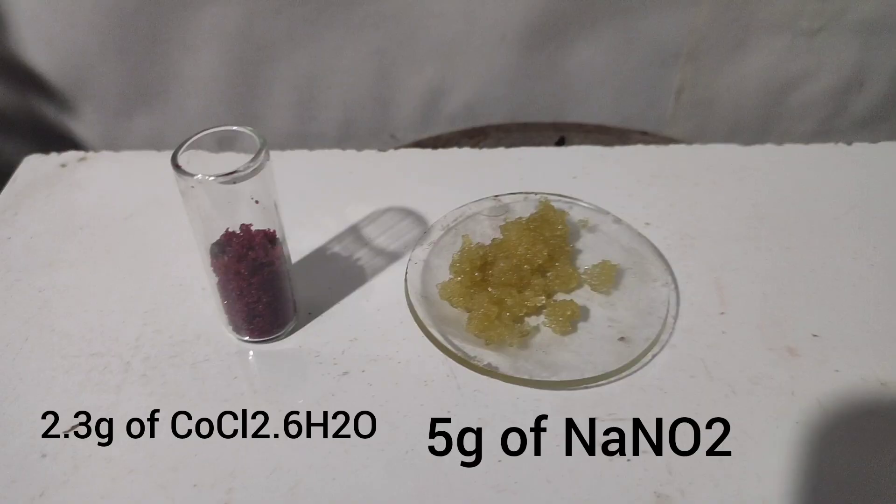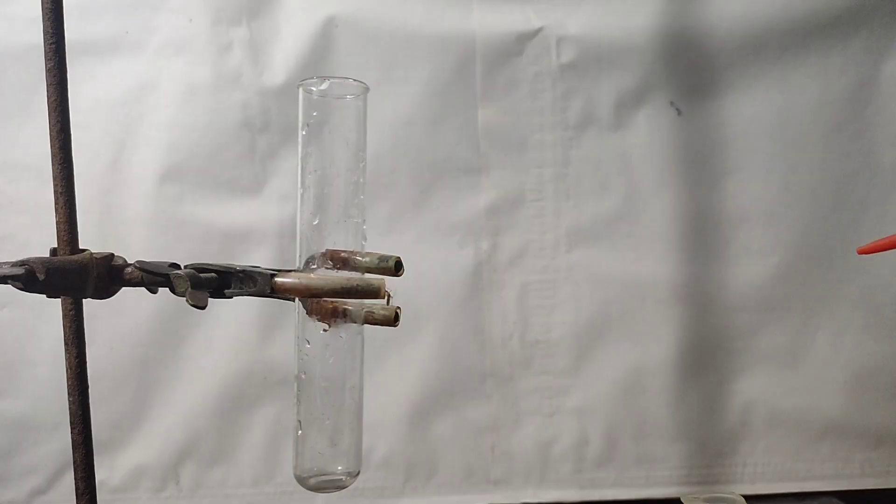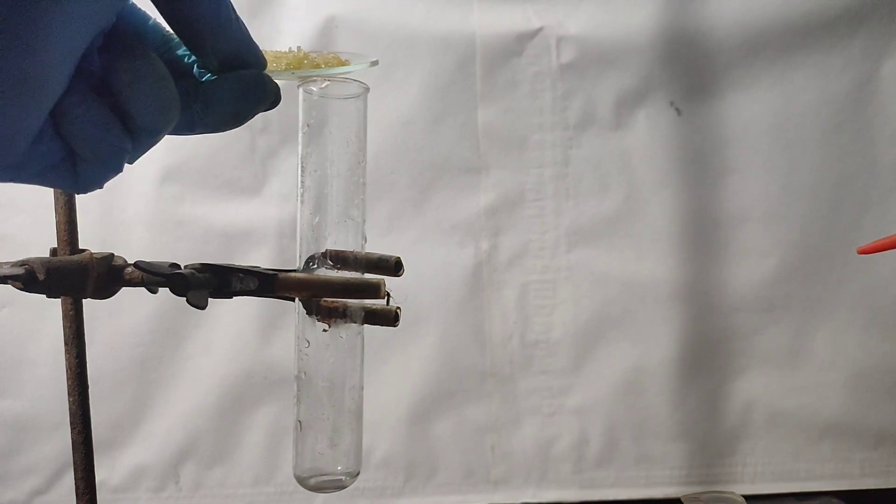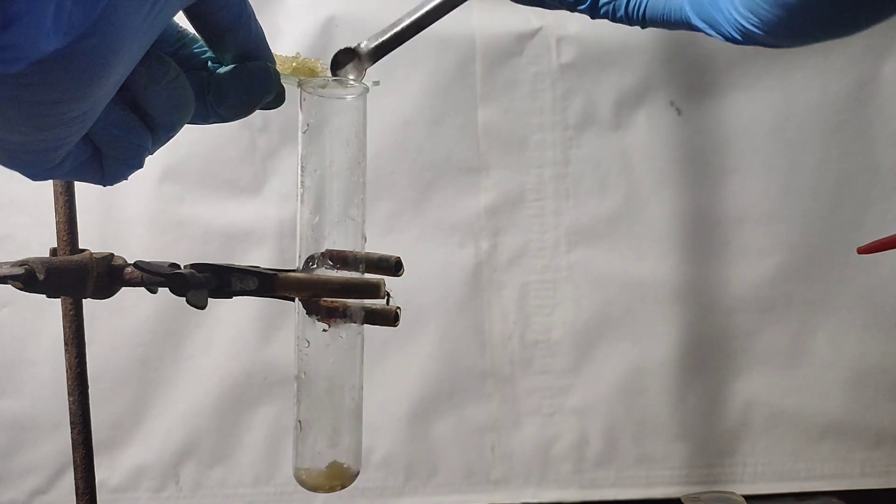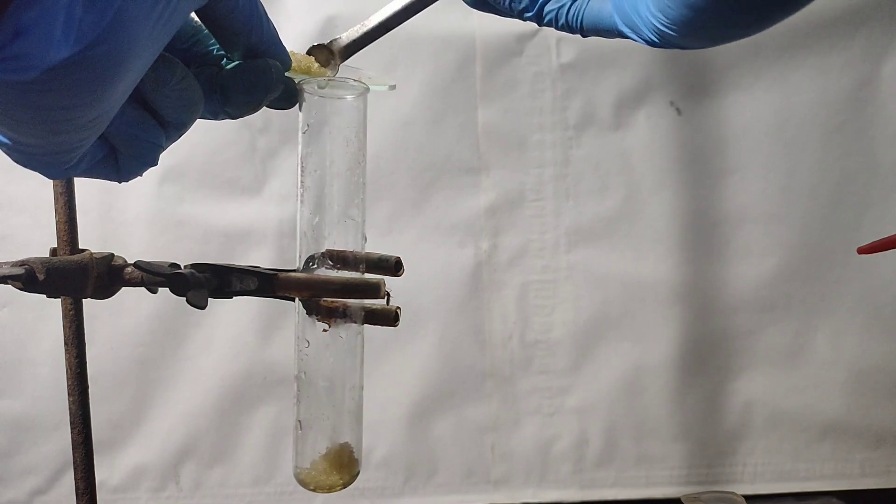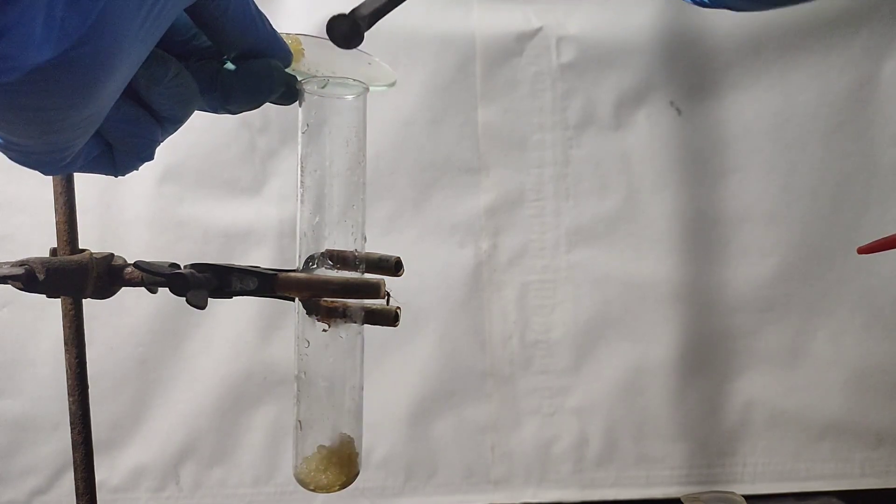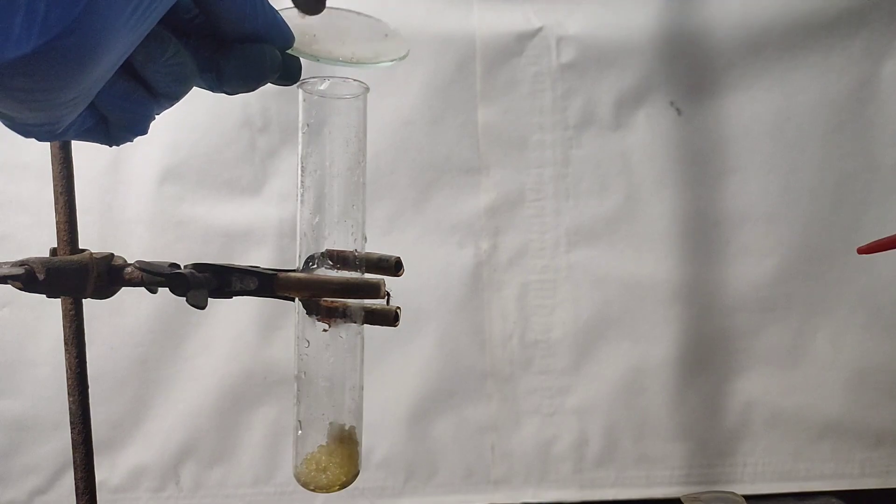I measured out 2.3 grams of cobalt chloride hexahydrate and 5 grams of sodium nitrite. Alternatively, 1.75 grams of cobalt nitrite can also be used. The literature I was following suggested using cobalt nitrite, but since I didn't have cobalt nitrite, I used cobalt chloride.